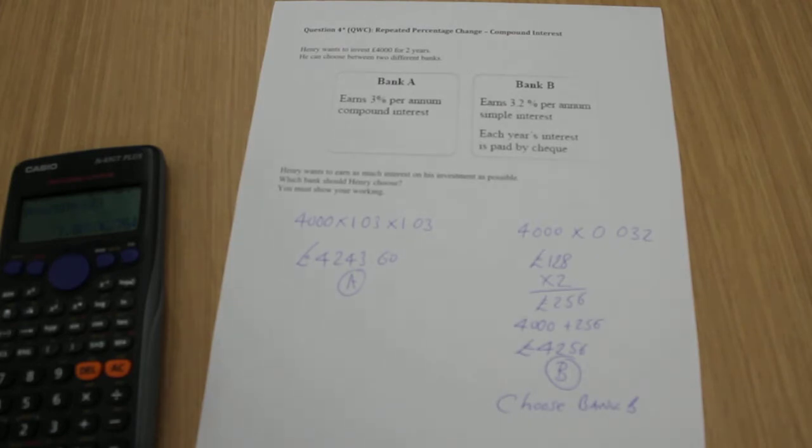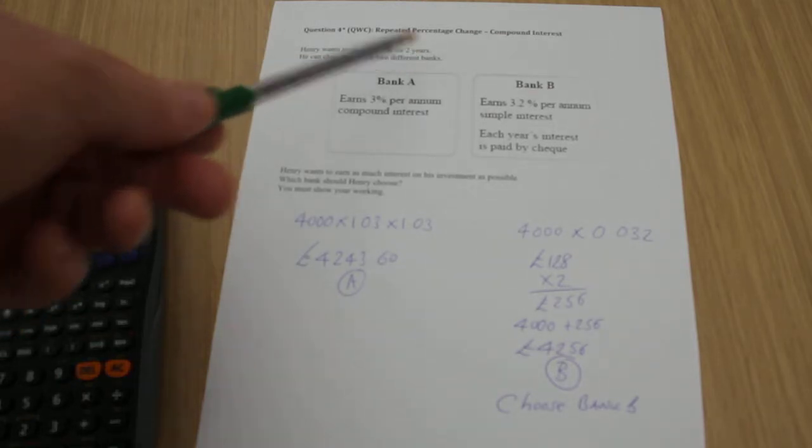Bank A, where you're getting compound interest at 3%, whereas Bank B, you're getting simple interest at 3.2%. We've got £4,000 to invest over two years.